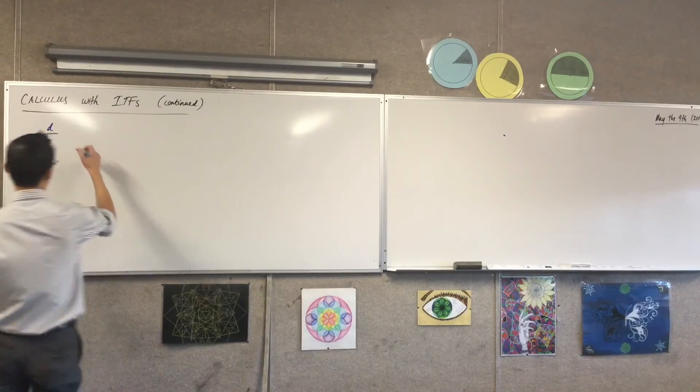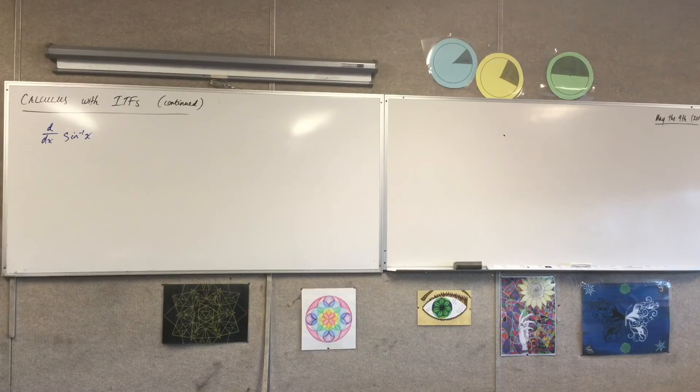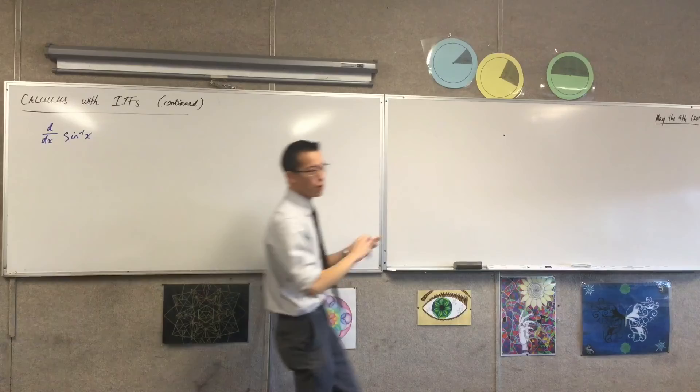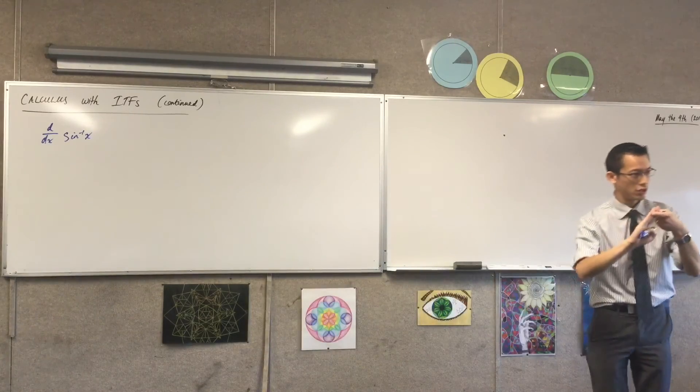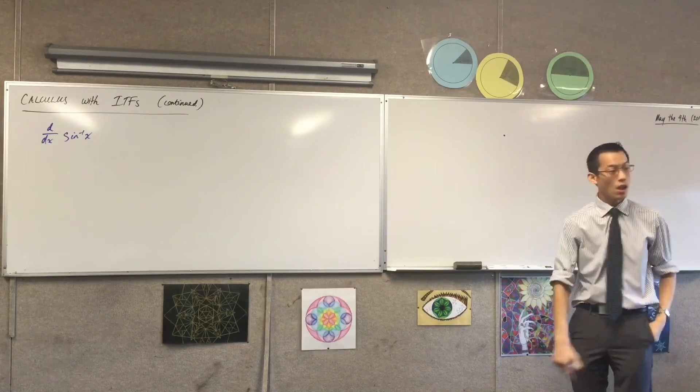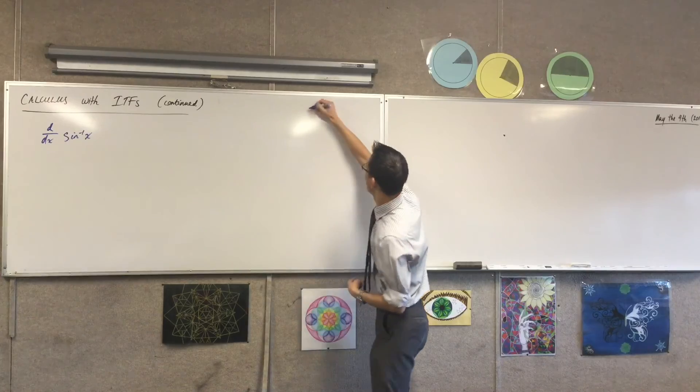If you do the derivative of sine inverse, we had to do some fancy stuff with knowing, if you've got a function, what the derivative of its inverse is, so that dy dx dx on dy business. We also had to know the Pythagorean identity, and we had to be careful with this. Do you remember this?